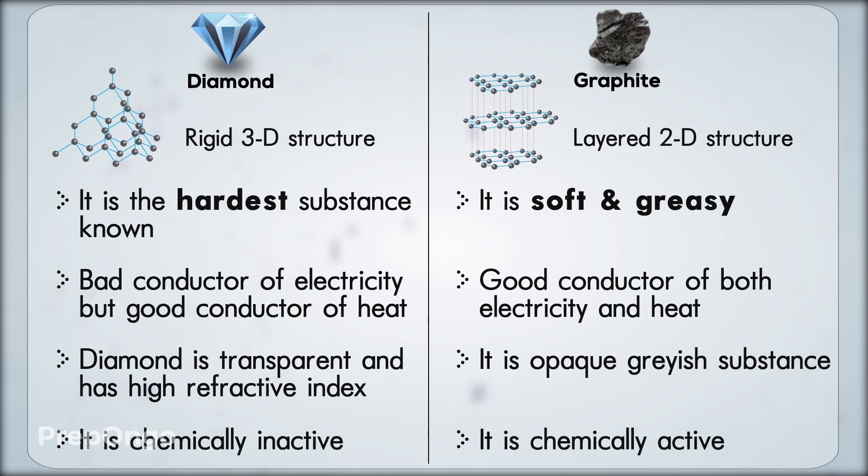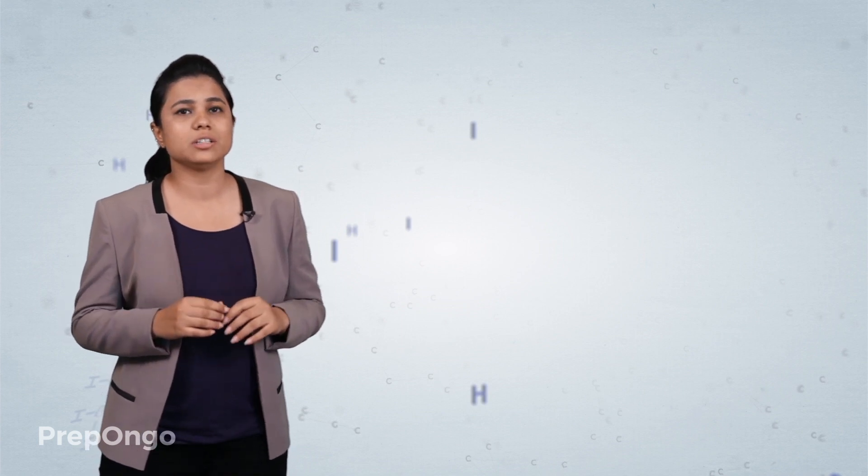Diamond is chemically unreactive on the other hand graphite is reactive. So we have seen the differences between diamond and graphite. One thing is clear from the above table, though both are made up of carbon but due to the change in the structure their property changes which makes them useful differently for different purposes.